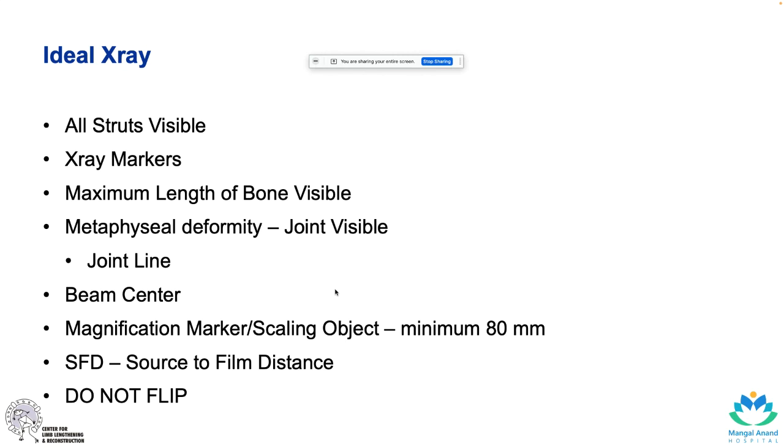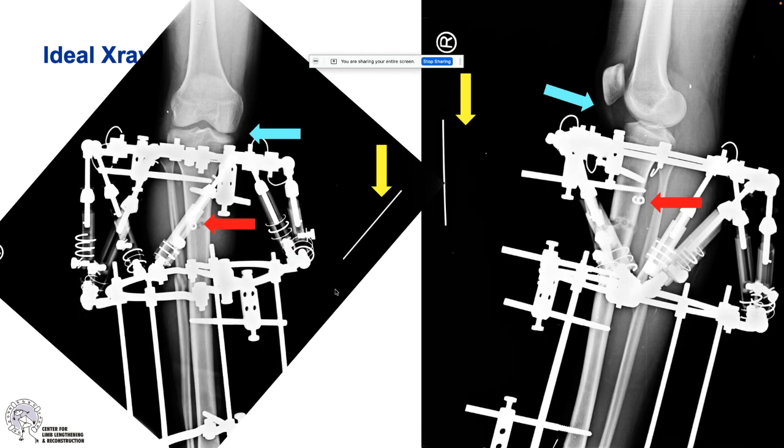One has to note down the source to film distance in millimeters and do not flip any of the X-rays. Otherwise there will be an error and you will not be able to match the orange lights.